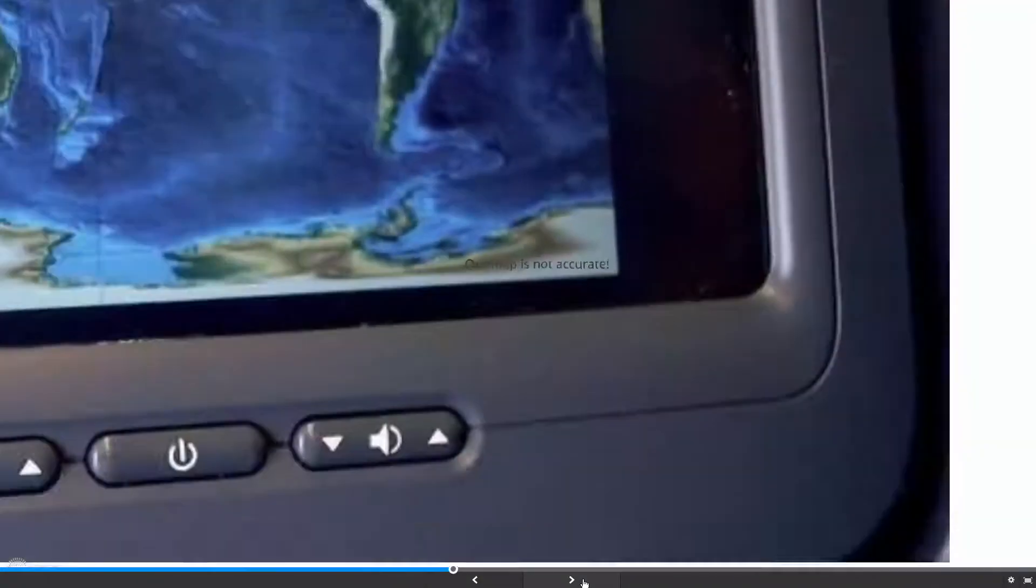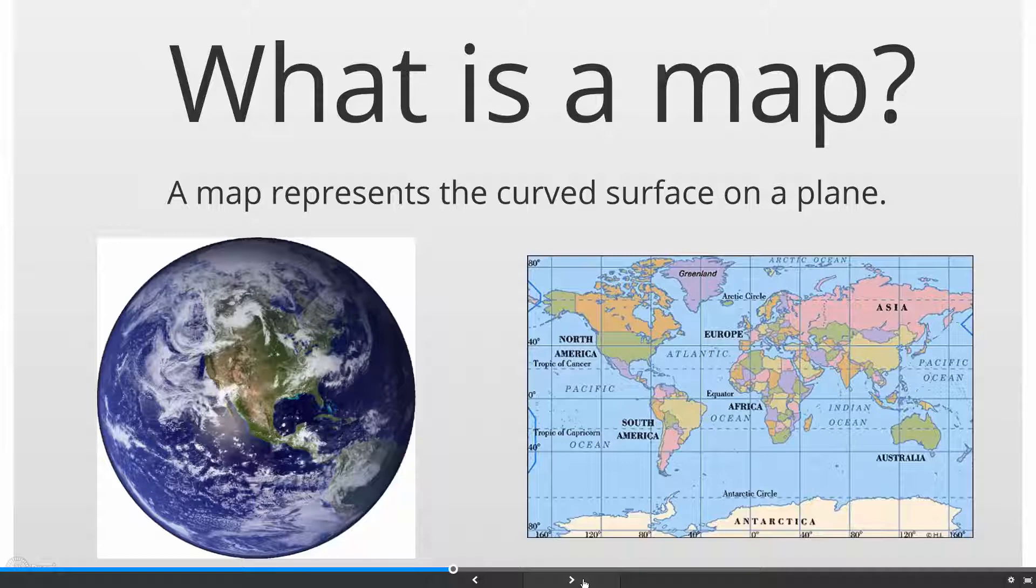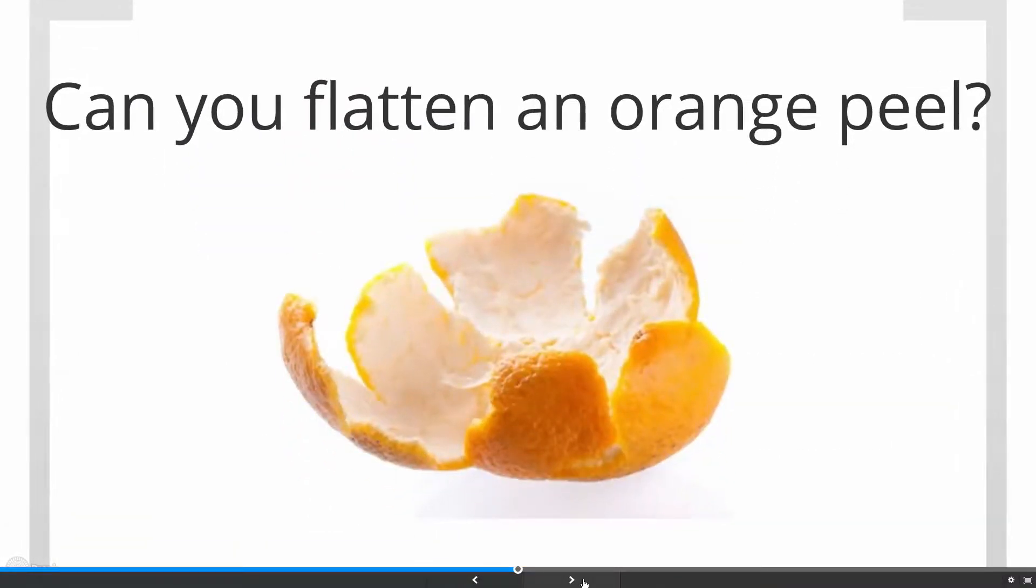What is a map? A map represents the curved surface on a plane. Then why is our map inaccurate? Imagine you're peeling an orange. Can you flatten it? The idea is the same. You can't flatten an orange peel, just as you can't flatten a curved surface to a plane, and hence maps are always inaccurate.